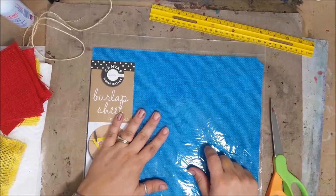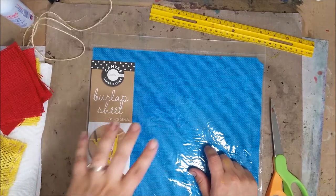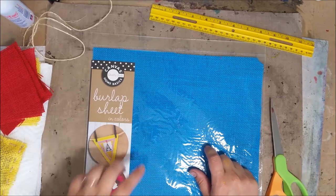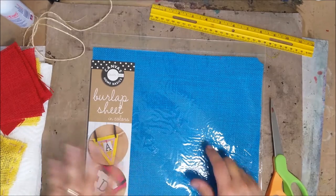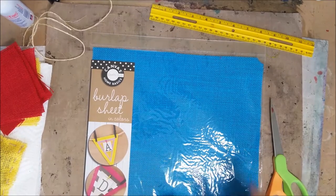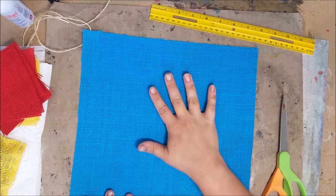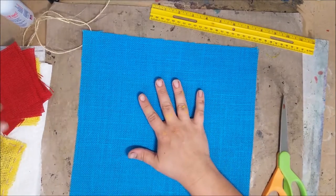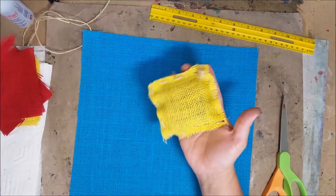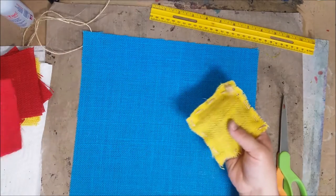I am starting with a 12 by 12 sheet of burlap. This will actually make four beanbags total, but we're only going to need three. So you're going to have a strip left over for a future project. I'm going to do the beanbags in three different colors: yellow, red, and blue.